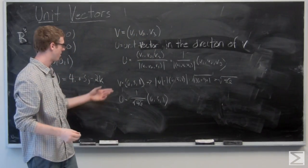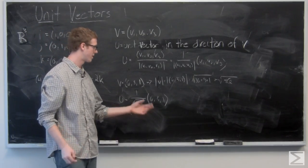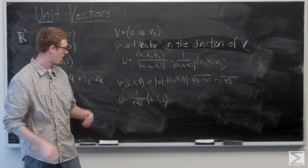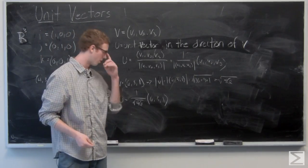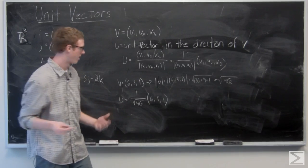So the unit vector in the direction of v equals (6,3,1) is going to be 1 over root 46 times (6,3,1). Now let's take a look at the magnitude of this resultant vector and we'll show you that it is indeed a unit vector.